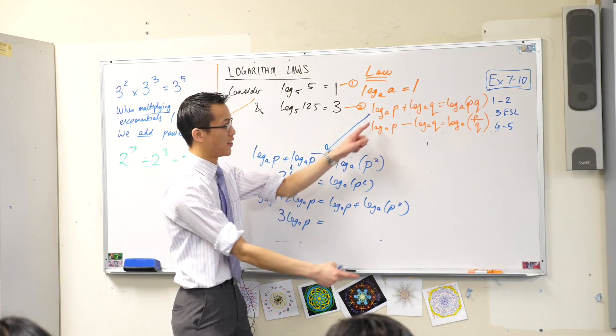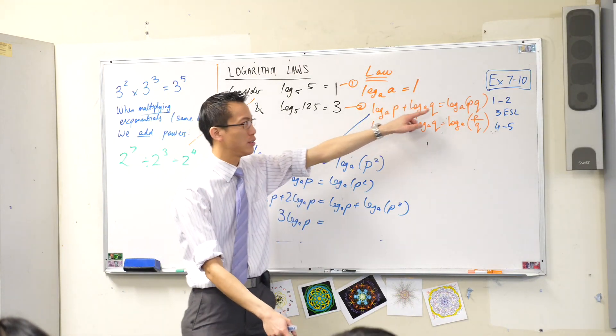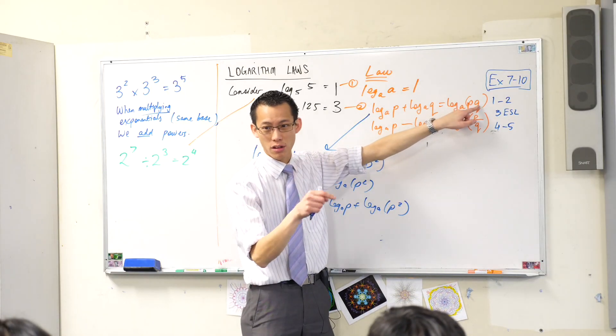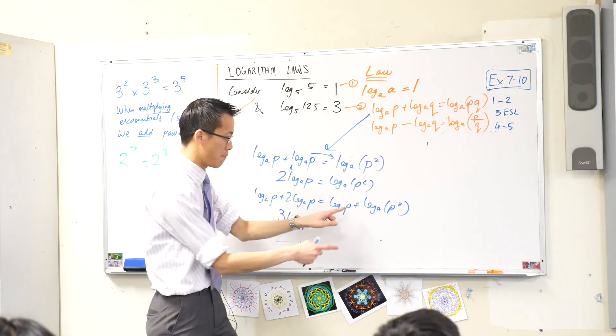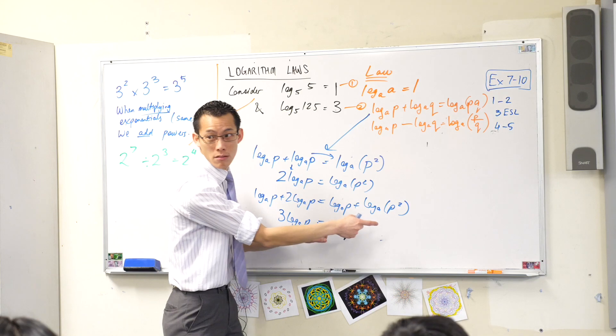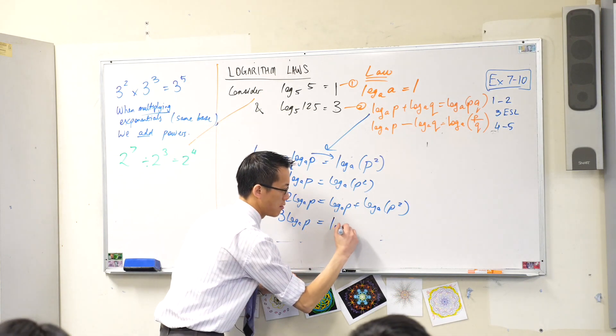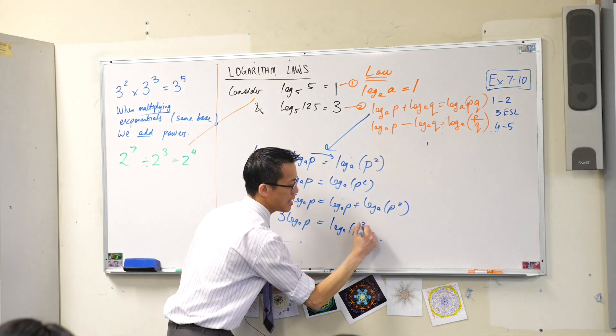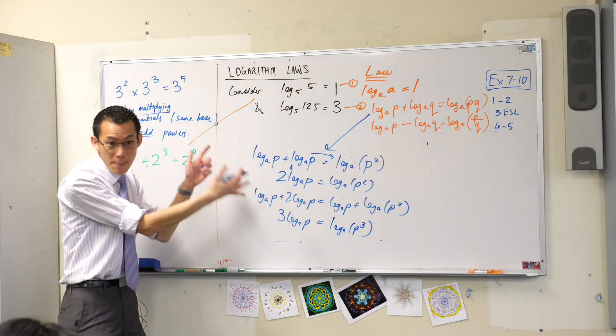When you're adding logs of the same base, what do you do with the numbers in the logs? You multiply them. So P times P squared is P cubed.